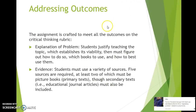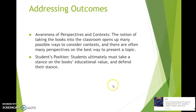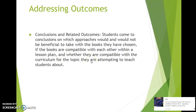The assignment is crafted to meet all the different outcomes of the critical thinking rubric. For explanation of a problem, students must justify teaching the topic, establishing its viability, and then figure out how to do so — which books to use and how to use them. For evidence, students must use a variety of sources; five sources are required, at least two of which must be picture books, plus secondary sources. For awareness of perspectives and context, taking the books into a classroom opens up many ways to consider context and perspectives on the best way to present the topic. Students must take a stance on the books' educational value and defend it, then draw conclusions on which approaches would and would not be beneficial and whether the books are compatible with the curriculum.